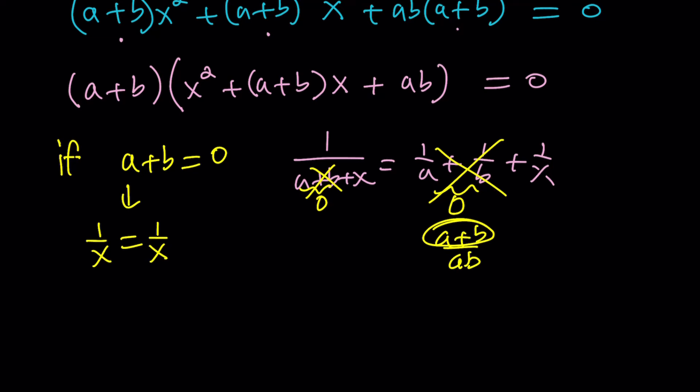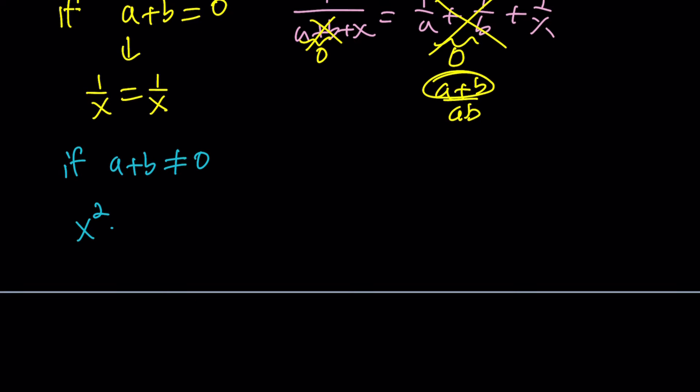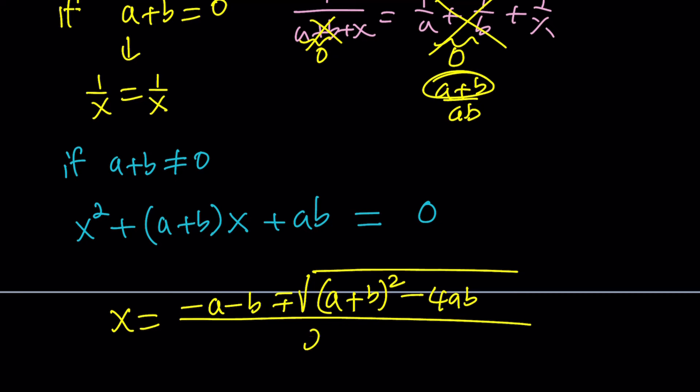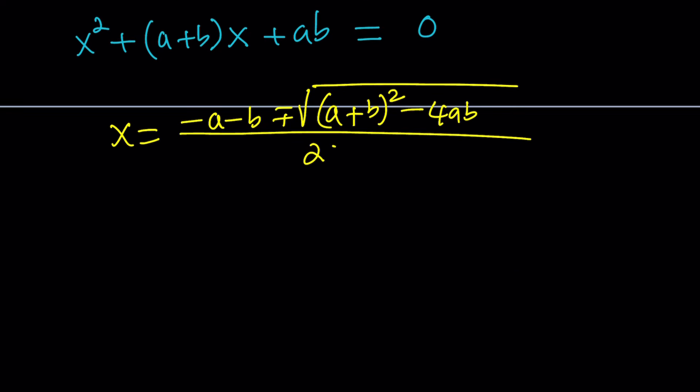Now, what happens if a plus b does not equal zero? That's the fun part, right? Then, we're going to have to deal with the quadratic. Let's rewrite it. x squared plus a plus b multiplied by x plus ab equals zero. To solve this quadratic equation, there's a couple different ways to go about it, but I'm going to introduce the quadratic formula first because it solves every quadratic. So, let's use it. Negative b plus minus the square root of b squared, which is the same as that, minus 4ab, and that over 2a, which is 2, because a is 1.